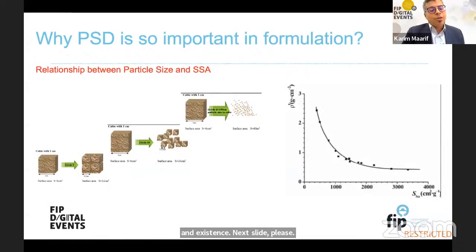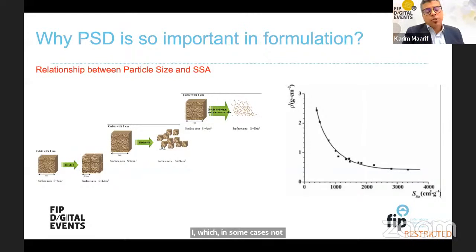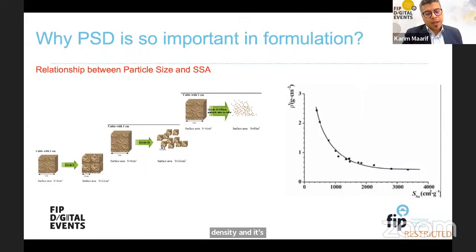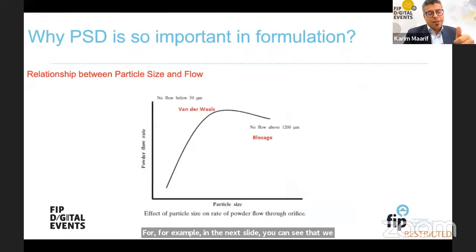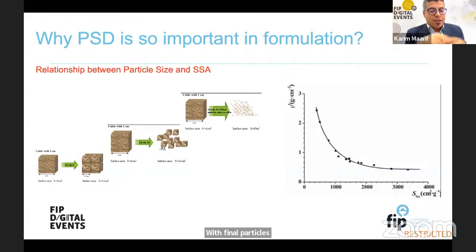The relationship between particle size and specific surface area can be seen in a plot: by increasing the specific surface area, we decrease the particle size, which in some cases can require an increase in volume. If we increase the specific surface area, we decrease the density and have an increase in the volume. However, in some cases, we can also increase the density of the powder by filling the pores with finer particles without changing the volume — this is another tool for understanding the particle size distribution of our blend.